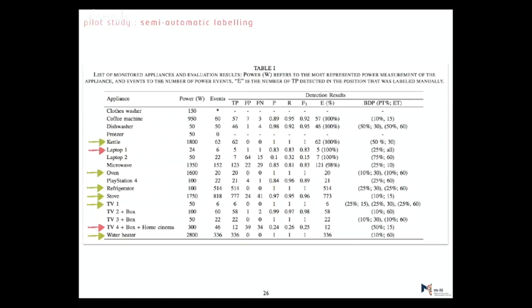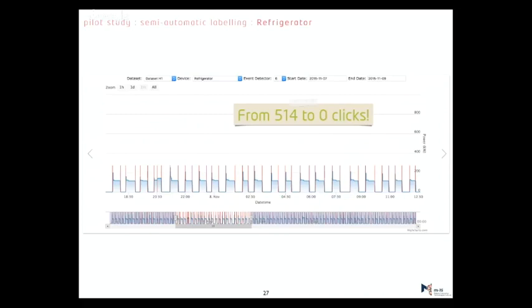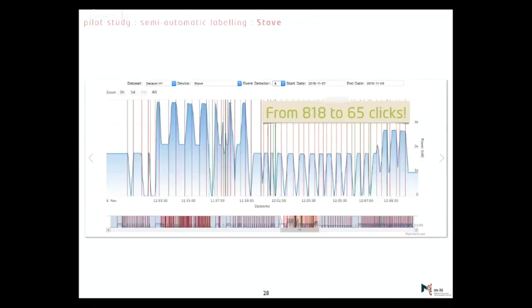And this is what we got. So the green are the success, very success cases, like the kettle, oven, refrigerator, stove, TV, water heater. And the red are the complicated cases, and the clothes washer is the first one. It's a whole different situation. First, we look at the success cases. So for a refrigerator, this is two days of data. We don't have to do anything. There's a model that does everything for us. No clicks, no user intervention. Done. For the stove, it's more complicated. But still, we can go from 118 clicks that we would have to give to 65. So this is a big decrease.